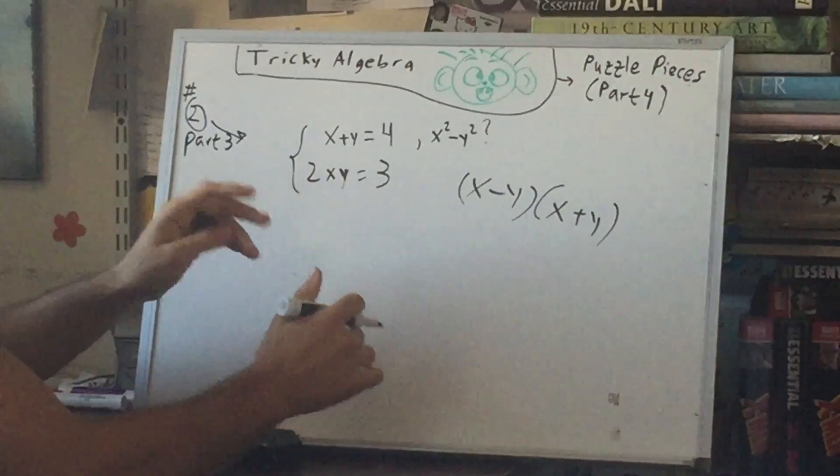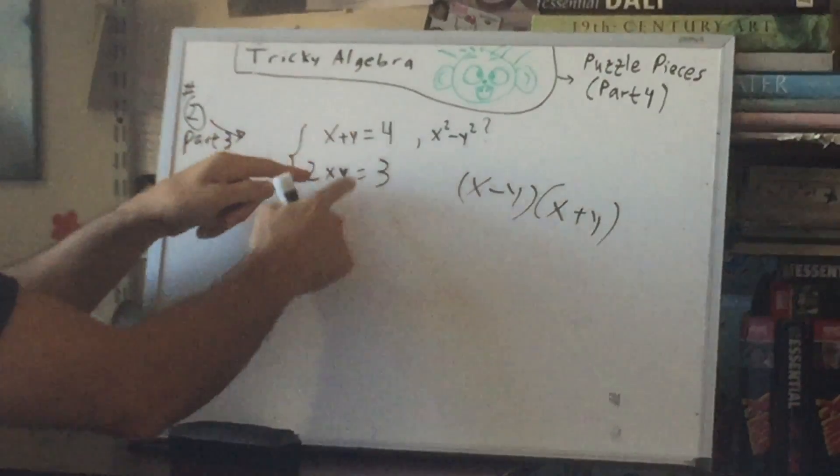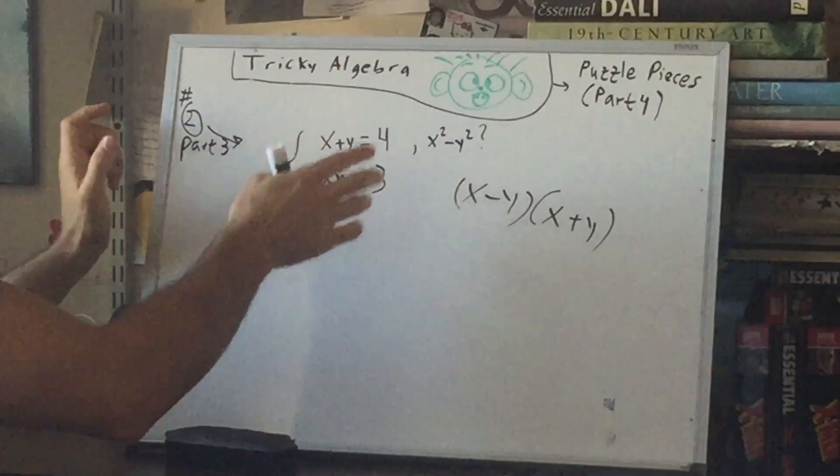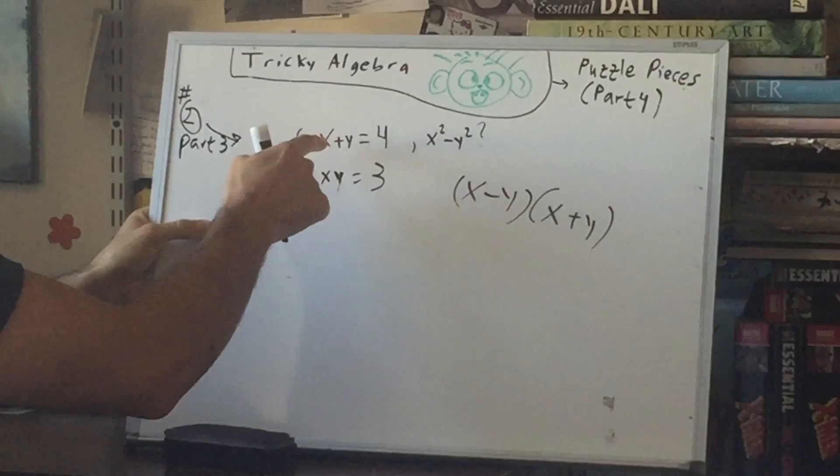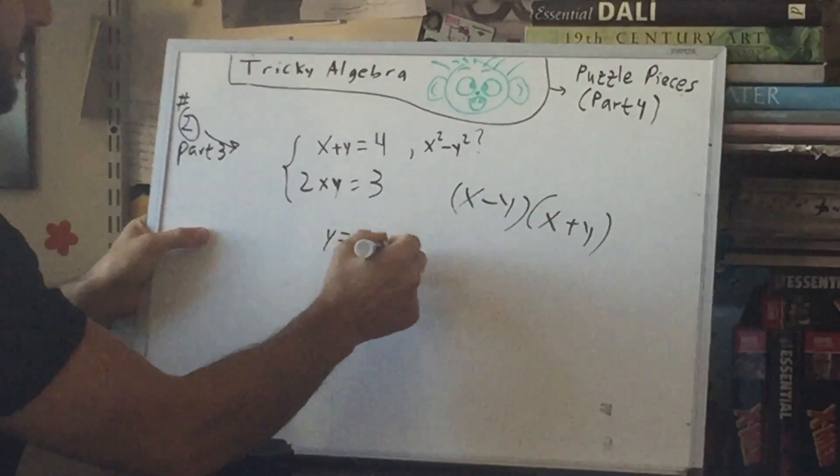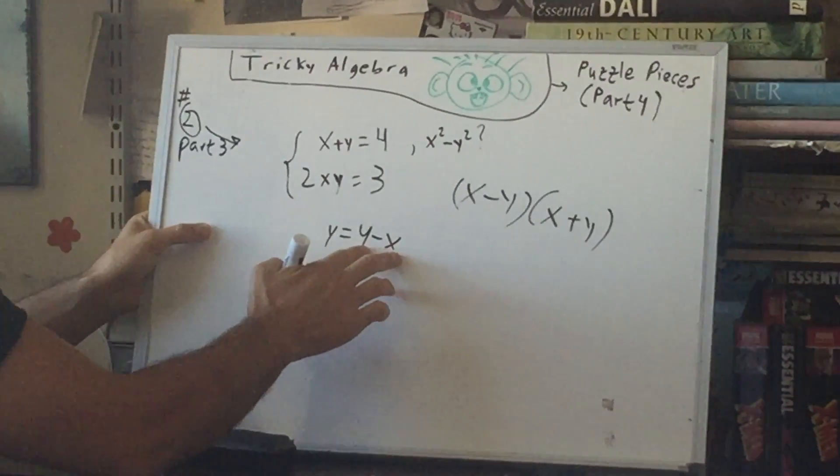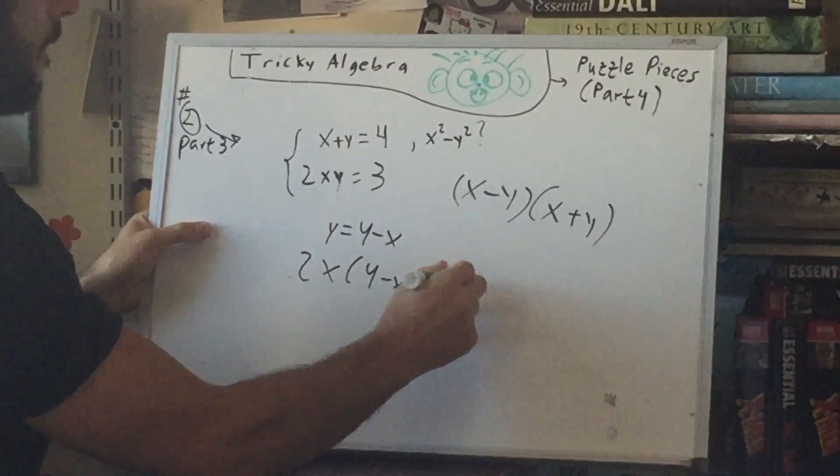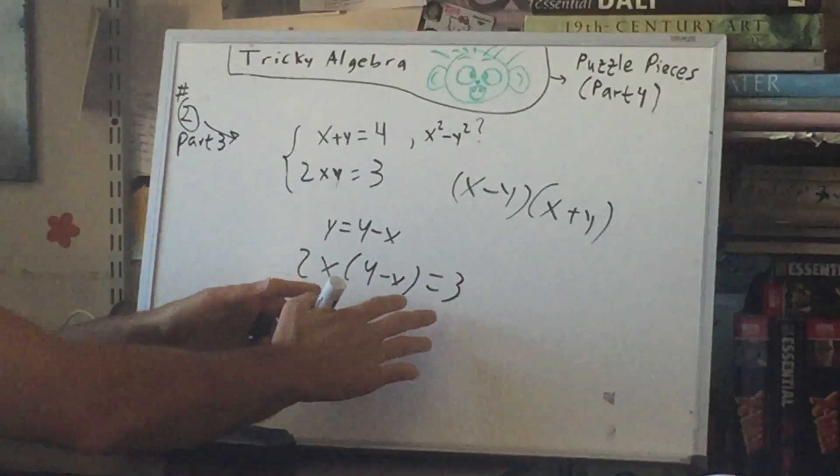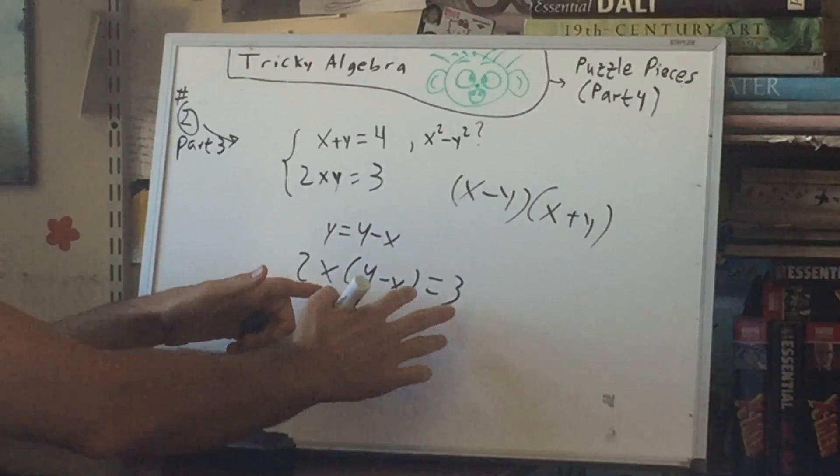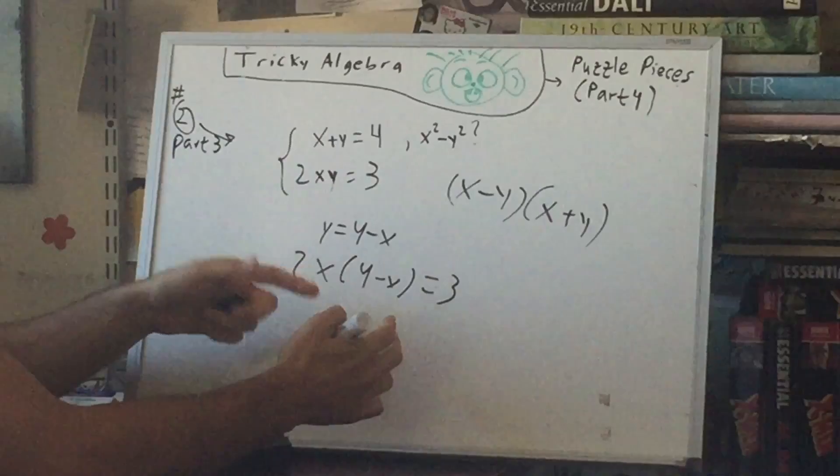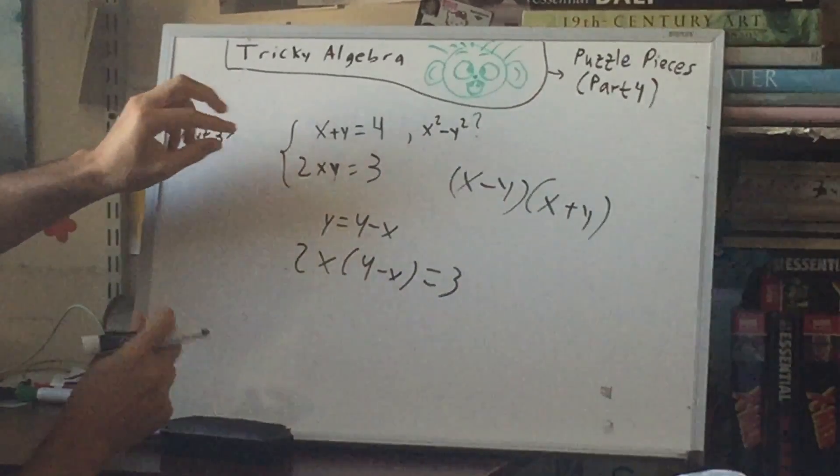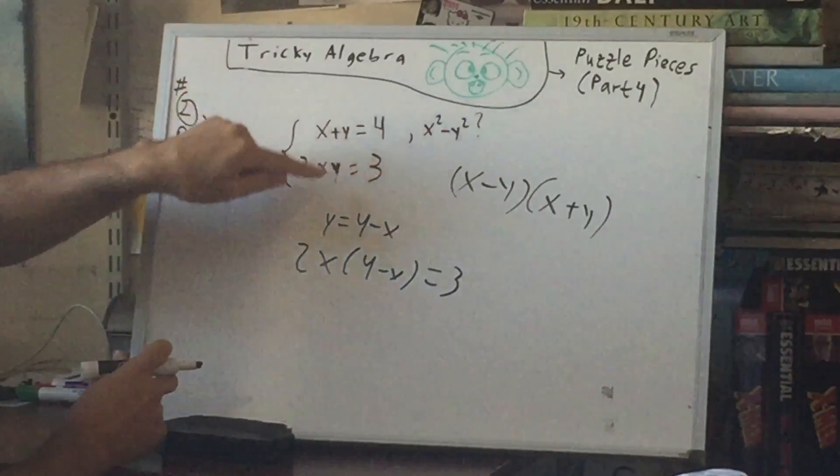Now before we do that, you could actually find x and y here - it'll be pretty annoying and that's why I don't want to do that, but how would you do it the normal way? You would substitute, let's say for y, so you get y = 4 - x from the first equation. Plug this into here. You can multiply this out, rearrange it, you'll get a quadratic equation. When you solve that you should get two values of x. You plug that in you'll get two values of y.